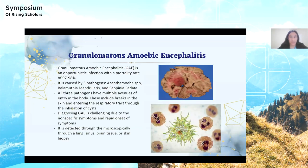The first is Granulomatous Amoebic Encephalitis, or GAE, which is an opportunistic infection caused by three different pathogens: Acanthamoeba, Balamuthia, and Sappinia. It has a staggering mortality rate of 97 to 98 percent, which can be attributed to its nonspecific symptoms compared to other bacterial or amoebic infections.